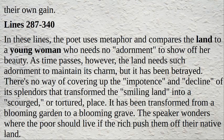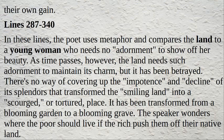Lines 287 to 340: The poet uses metaphor and compares the land to a young woman who needs no adornment to show off her beauty. As time passes, however, the land needs such adornment to maintain its charm, but it has been betrayed. There is no way of covering up the impotence and decline of its splendors, which transformed the smiling land into a scourged and tortured place — from a blooming garden to a blooming grave. The speaker wonders where the poor should live if the rich push them off their native land.